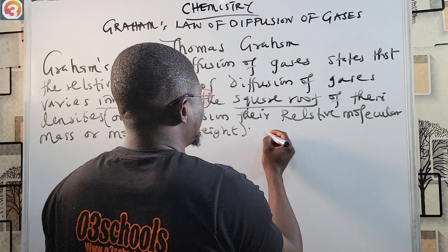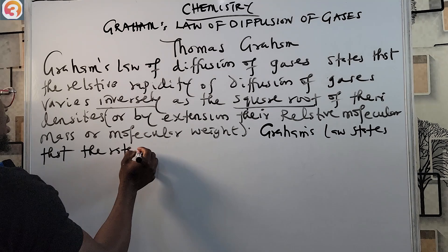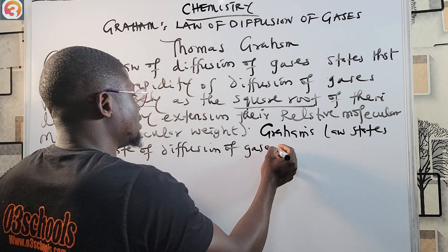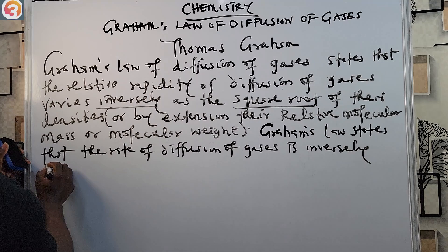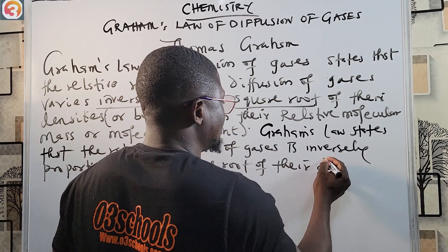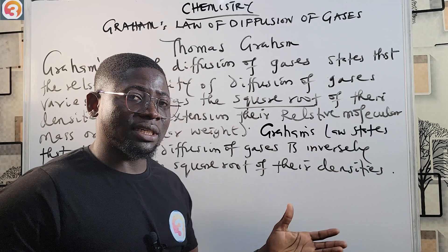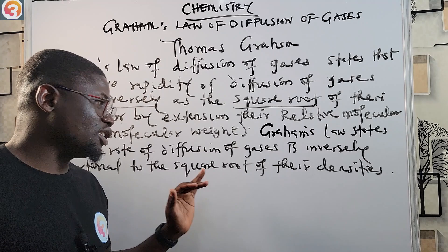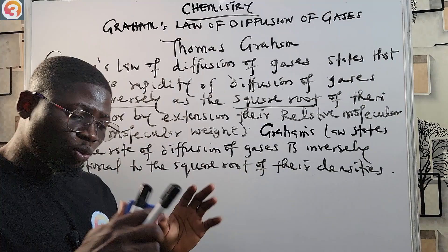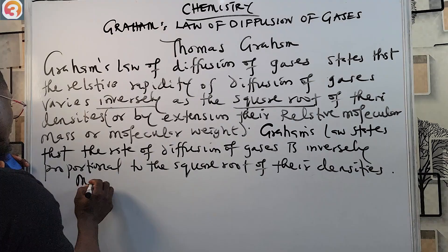In simple terms, Graham's Law states that the rate of diffusion of gases is inversely proportional to the square root of their densities. So the rate of diffusion of gases varies inversely as the square root of the densities, or equivalently, the square root of the relative molecular mass.